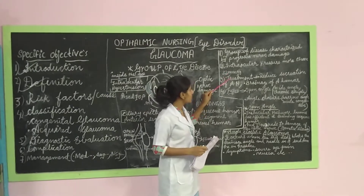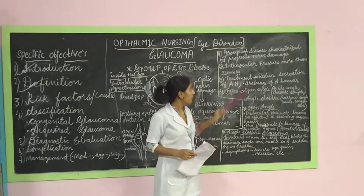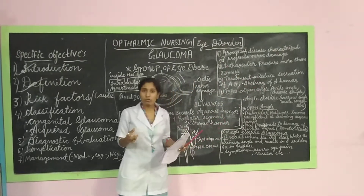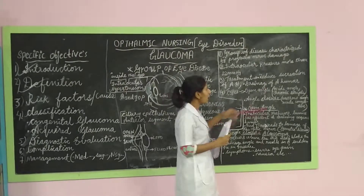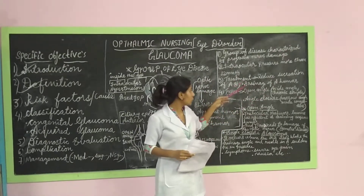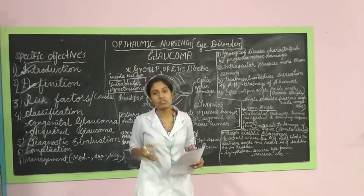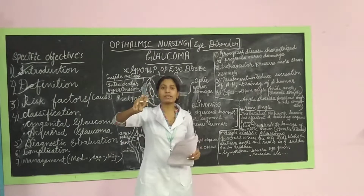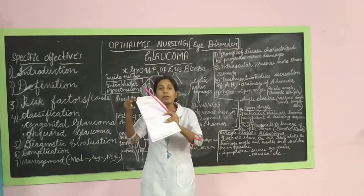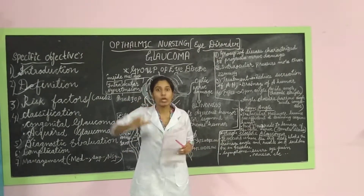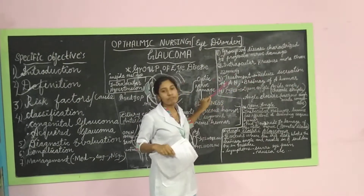For Glaucoma, treatment is aimed at reducing secretion of aqueous humor. We need to reduce the secretion of aqueous humor, or we need to increase its drainage. For example, if you have a bucket with a tap on and water keeps filling, you have to stop it. You can reduce secretion of aqueous humor using medications such as beta-blockers, according to the doctor's prescription.